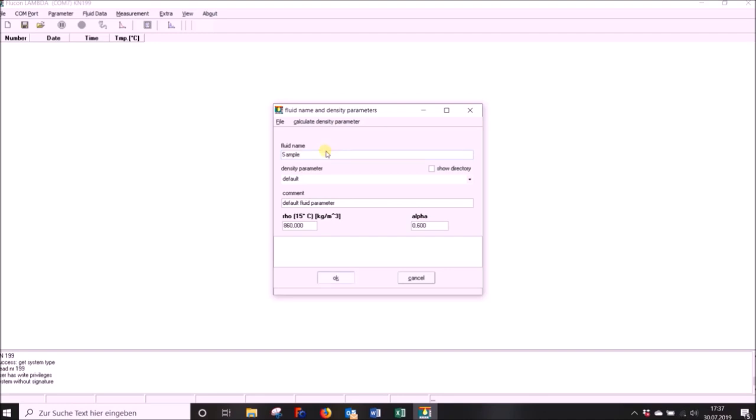If you want to conduct heat capacity in addition to thermal conductivity measurement, please fill in the density parameters of your specific fluid. You may also use the calculator function if you have certain nominal densities available, for example from the data sheet of your substance.